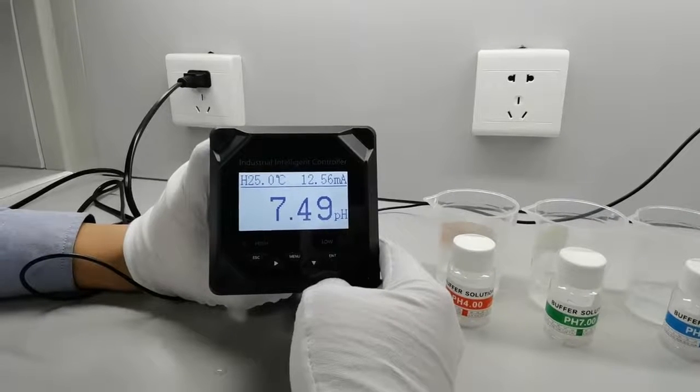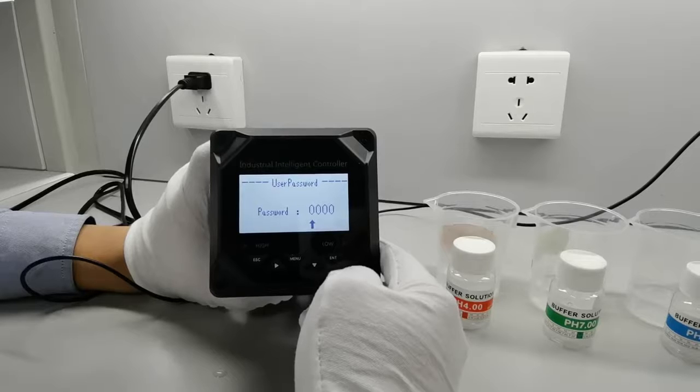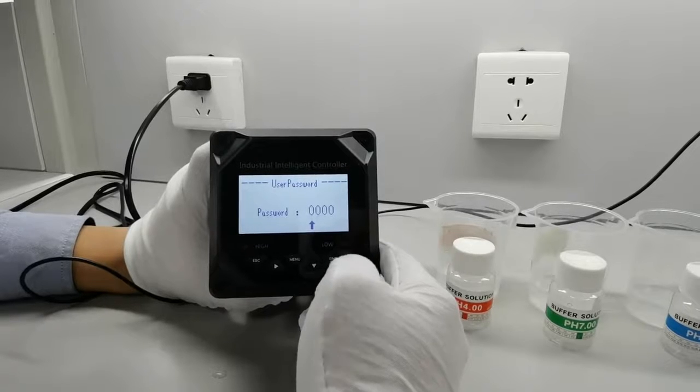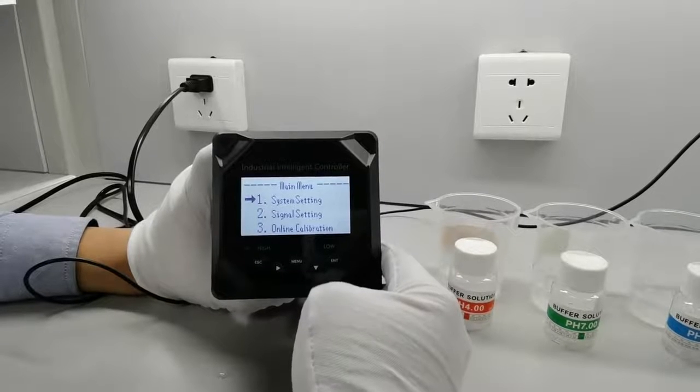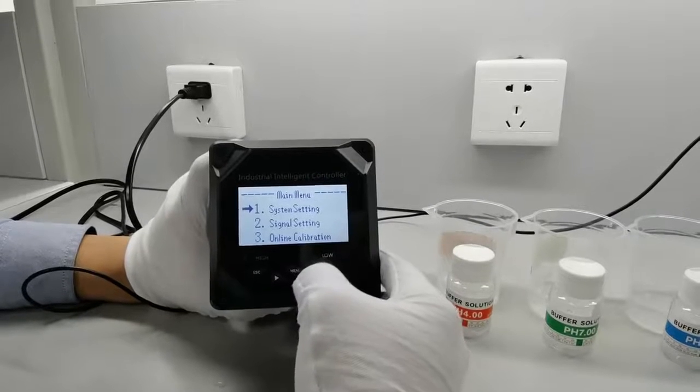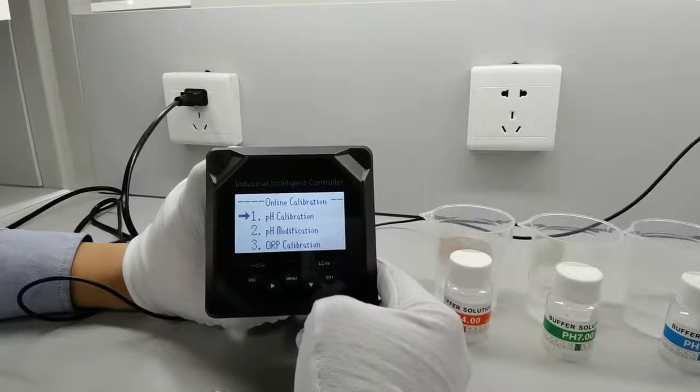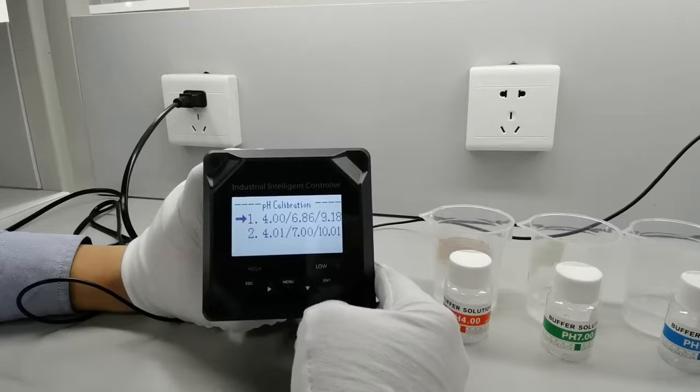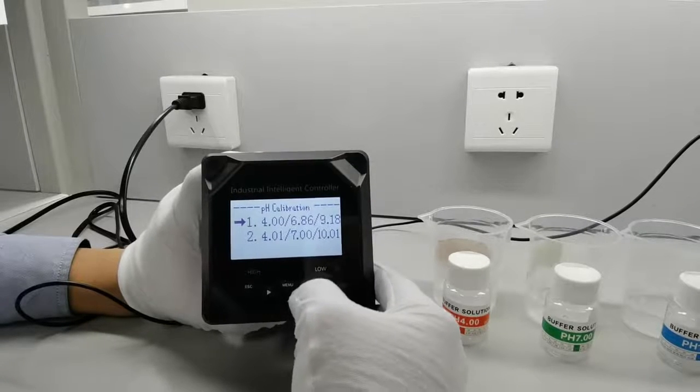Press menu and then enter the password 0000. Next, go to online calibration, then pH calibration, and select pH 4, 7, and 10.